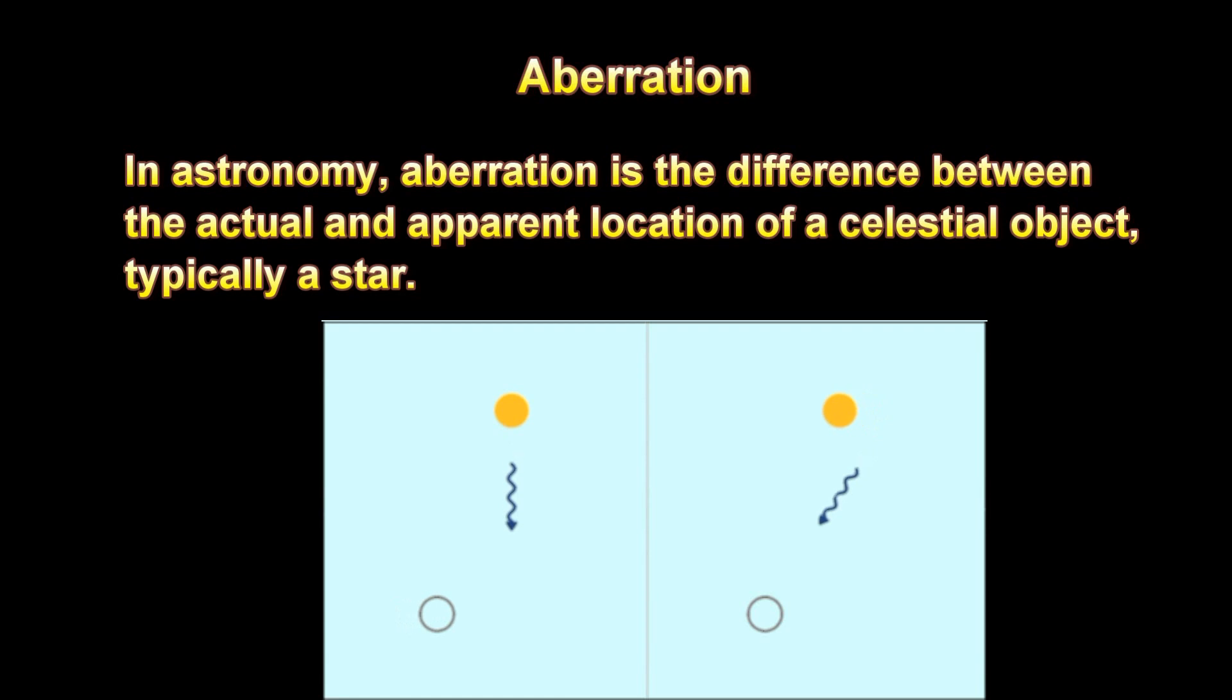Aberration. In astronomy, aberration is the difference between the actual and apparent location of a celestial object, typically a star.